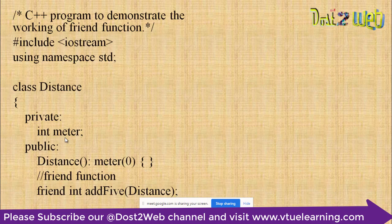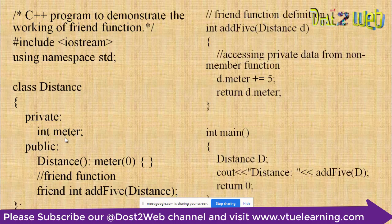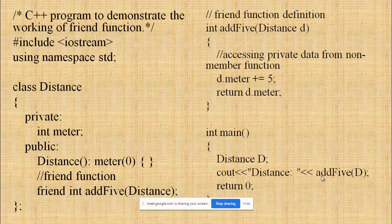Similar to a normal member function, you add the keyword 'friend' before it. In the main program, no object is created to access the member function — we directly call the friend function, which accesses the private member. This is the advantage of the friend function: private members can be accessed directly without creating an object.